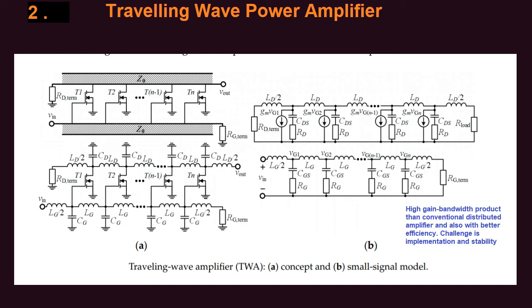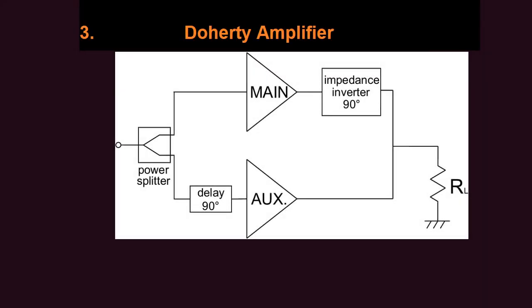The next amplifier configuration is the Doherty amplifier. It is a very old amplifier — invented in 1936 — and the principle is well known. It has a main amplifier and an auxiliary amplifier connected in such a way that the back-off efficiency is enhanced. Back-off efficiency is important because in modern communication systems the signals have very high peak-to-average power ratio. Doherty provides very high back-off efficiency, and it has been extensively used in base stations. For 5G systems it has been explored at 28 GHz, 60 GHz, sub-6 GHz, and in many configurations, frequencies, and technologies.